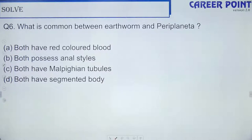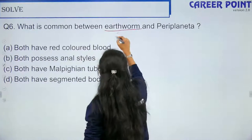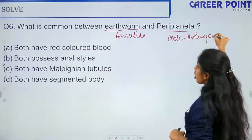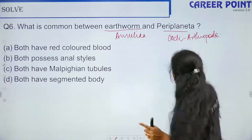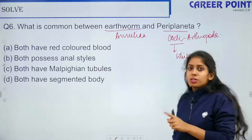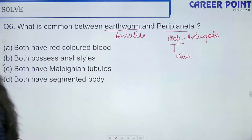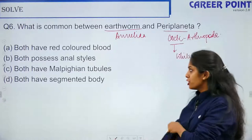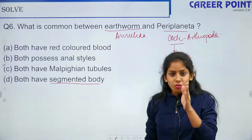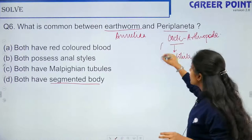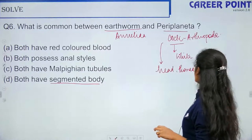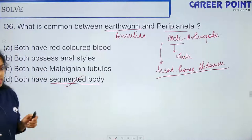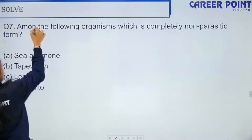Question 6: What is common between an earthworm (Annelida) and Periplaneta (cockroach, Arthropoda)? Both have red-colored blood? No — cockroach has white blood. Both have anal cerci? No — only cockroach. Both have Malpighian tubules? No — one has nephridia, the other has Malpighian tubules. Both have segmented body? Yes — earthworm is segmented and cockroach is also segmented into head, thorax, and abdomen. Answer: option D.